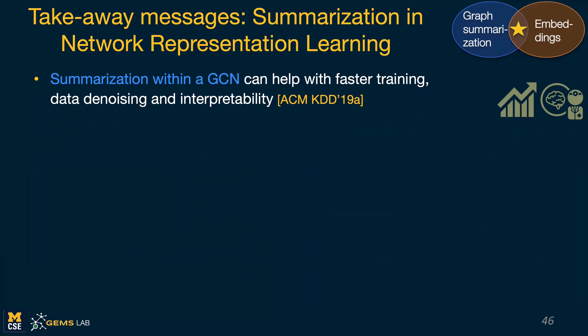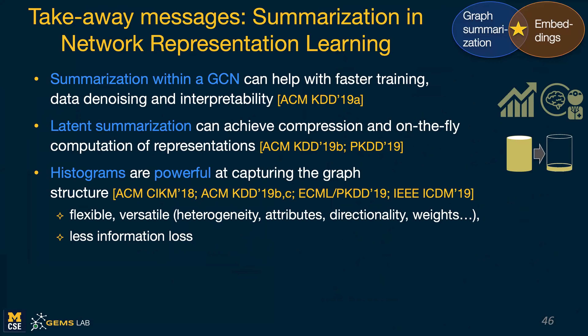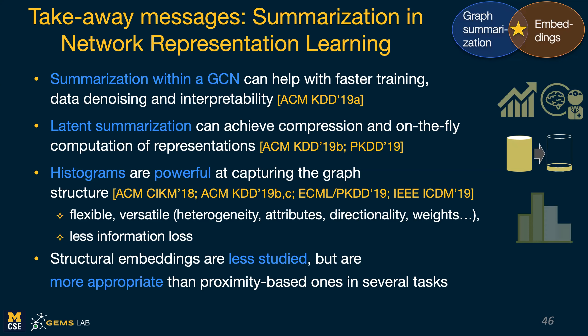Takeaways: summarization within a GCN can help with faster training, denoising the data, and interpretability. Latent summarization can achieve compression and on-the-fly computation of representations. We found again and again that histograms are powerful at capturing graph structure — the last two works are based on histograms, which are flexible and versatile, can incorporate many different properties of graphs, and incur less information loss. The last point is that structural embeddings are less studied overall, but they may be more appropriate for several tasks, so they're worth looking into more.